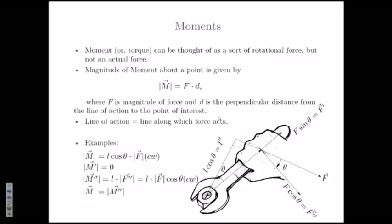Let's look at an example — a hand trying to screw or unscrew a nut. We want to compute the moment due to the applied force. The moment is the force magnitude times the perpendicular distance. With a little trigonometry: if the distance from the handle end to the nut is L and the angle is theta, then the perpendicular distance is L cos theta, so moment = F × L cos theta. So we can compute the moment due to this force.